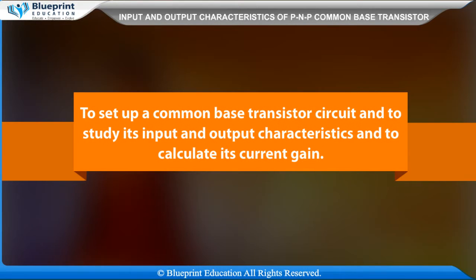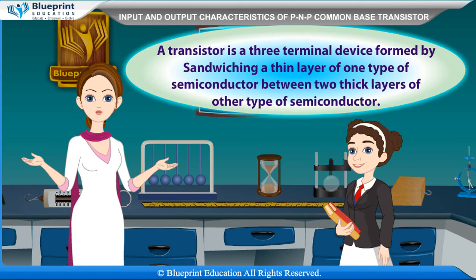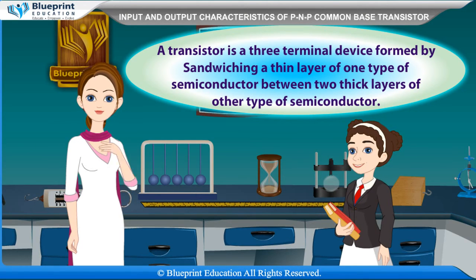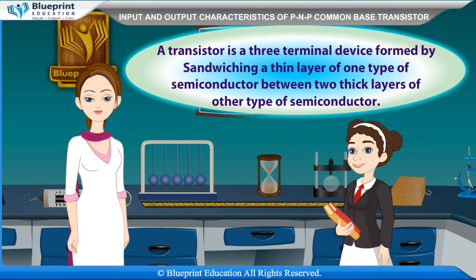The aim of this experiment is to set up a common base transistor circuit and to study its input and output characteristics and to calculate its current gain. A transistor is a three-terminal device formed by sandwiching a thin layer of one type of semiconductor between two thick layers of another type of semiconductor.